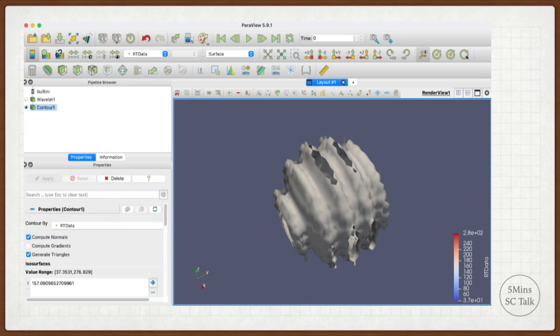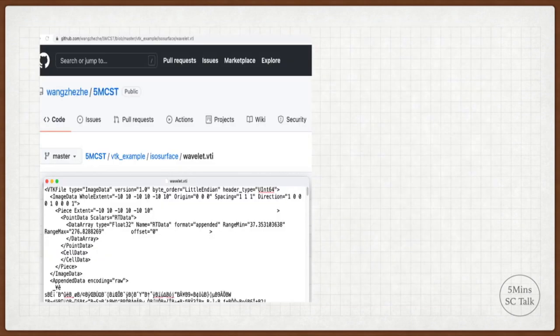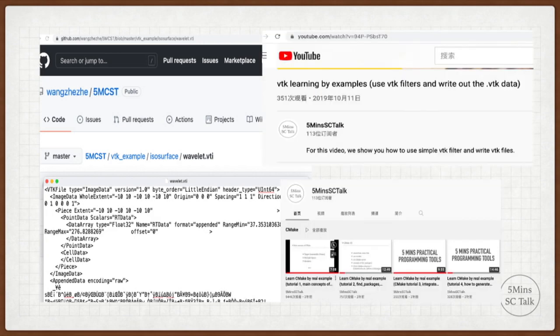If we try to do the isosurface operation by ourselves with CPP code, we may first save the Wavelet data to disk firstly. You may get the sample file here. We then need to load the image file and generate the VTK image data in C++ program. Please check the video below to see how to read the VTK image file by XML reader if you are not familiar with the VTK data read and write operation.